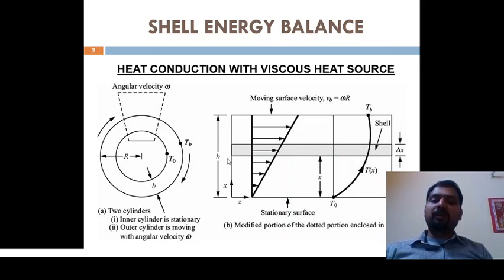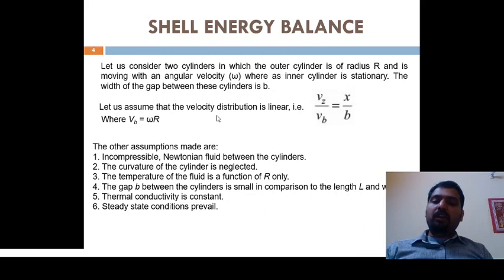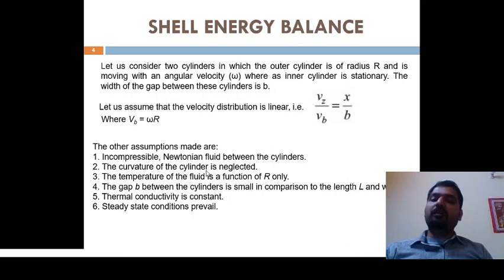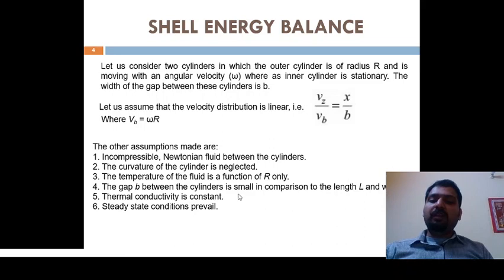The distance between the two plates is given by small b. For any shell energy balance we consider an elementary section denoted as delta x. The following assumptions are taken: the fluid is incompressible and Newtonian; the curvature of the cylinder is neglected since we converted the cylindrical geometry to Cartesian coordinates; the temperature of the fluid is a function of x only; the gap b is small compared to the length and width; thermal conductivity is constant; and steady state conditions apply.